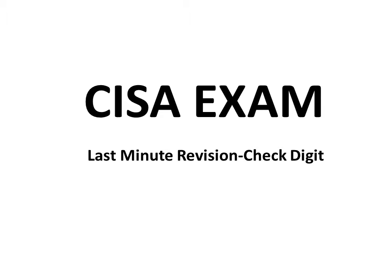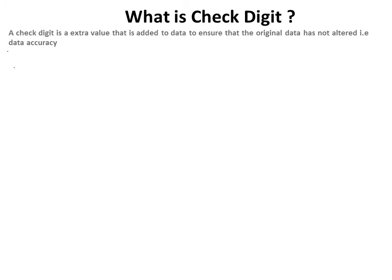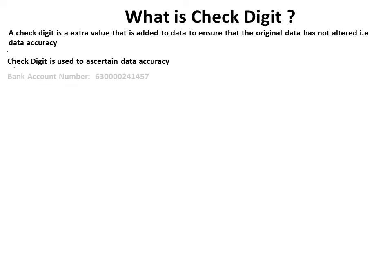This is the last minute revision for check digit. For a detailed video, please visit the link below. So what is check digit? It is an extra value that is added to data to ensure that original data has not been altered — that is, data accuracy. Check digit is used to ascertain data accuracy. We will take one example of how it works.